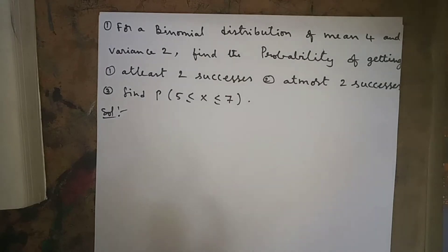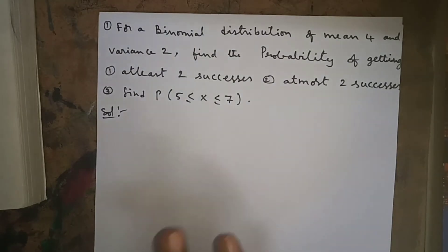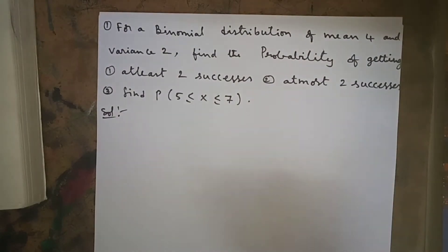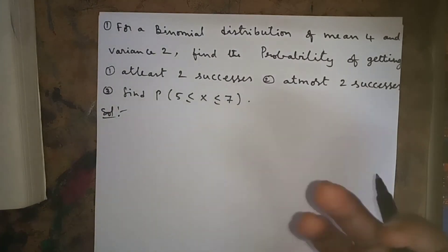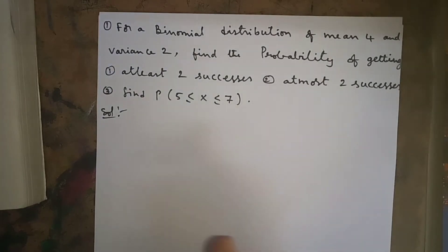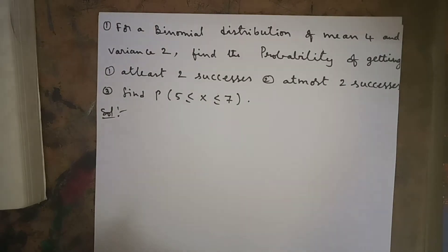A variable x is said to be a discrete random variable if x assumes only a countably finite or infinite number of values. If x lies within a countably finite range — like 7, 8, 10, 11, 12 — and the number of trials n is countably finite, then we use binomial distribution.